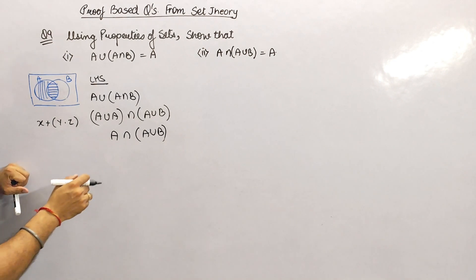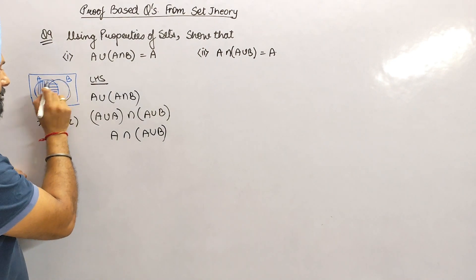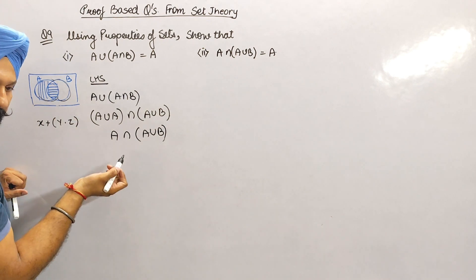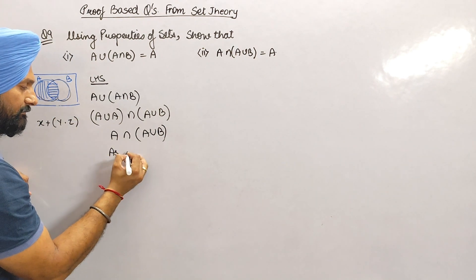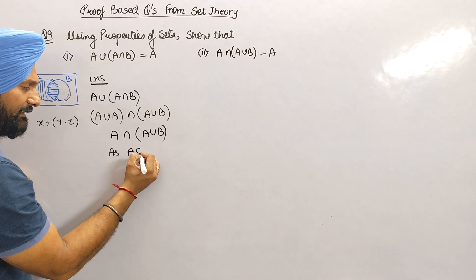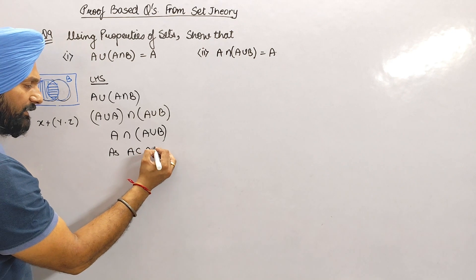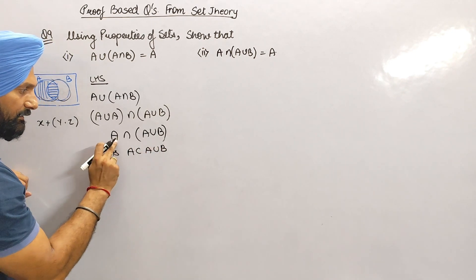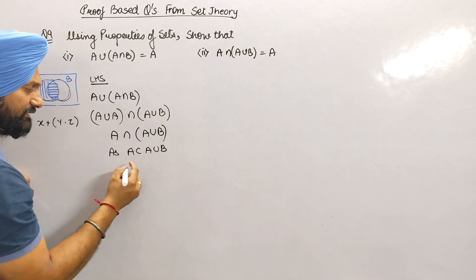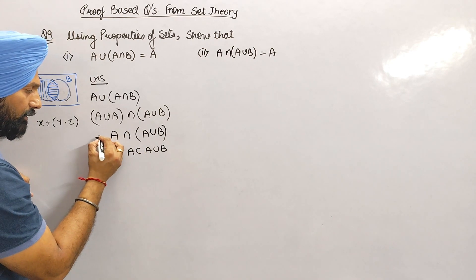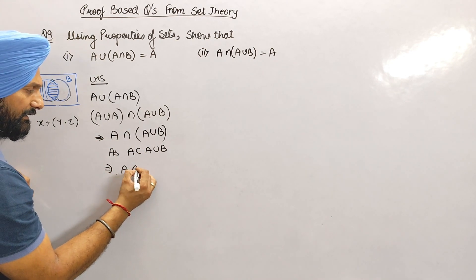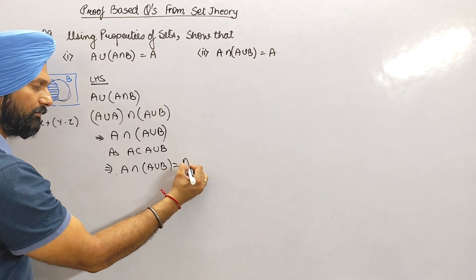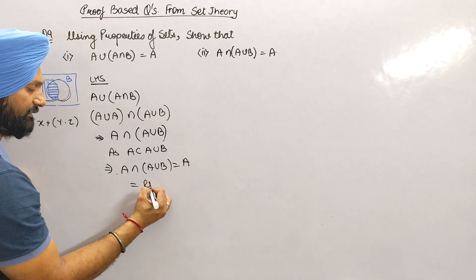Now, A union B is full. This intersection is A. As A is a subset of A union B, and A union B is a subset of A. So what is the intersection? A intersection A union B is equal to RHS.